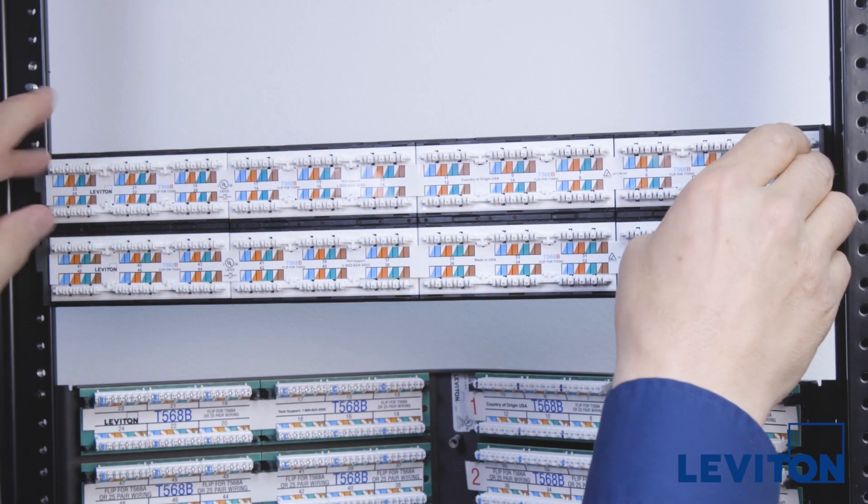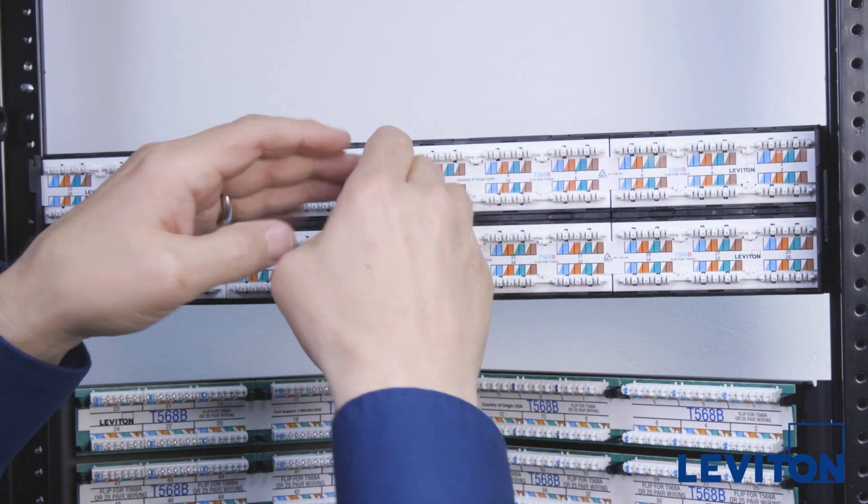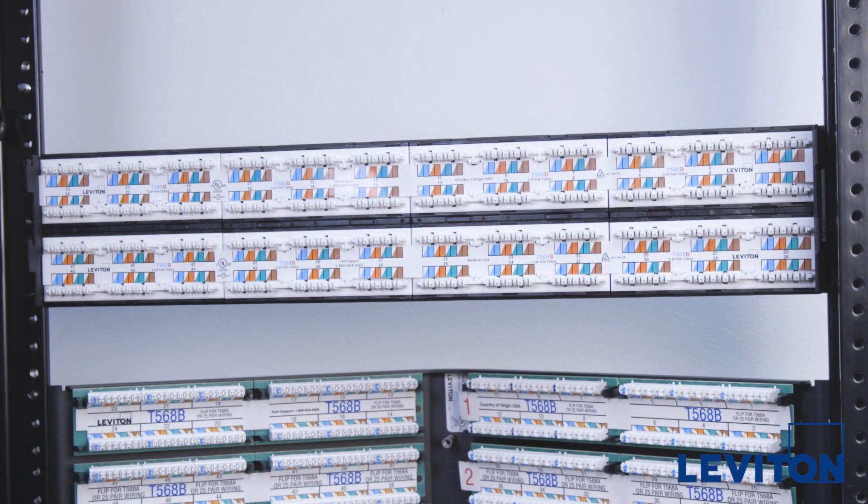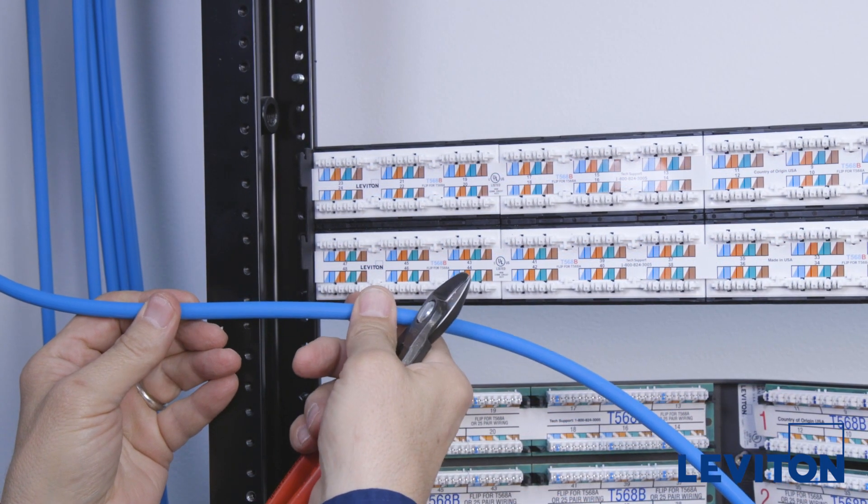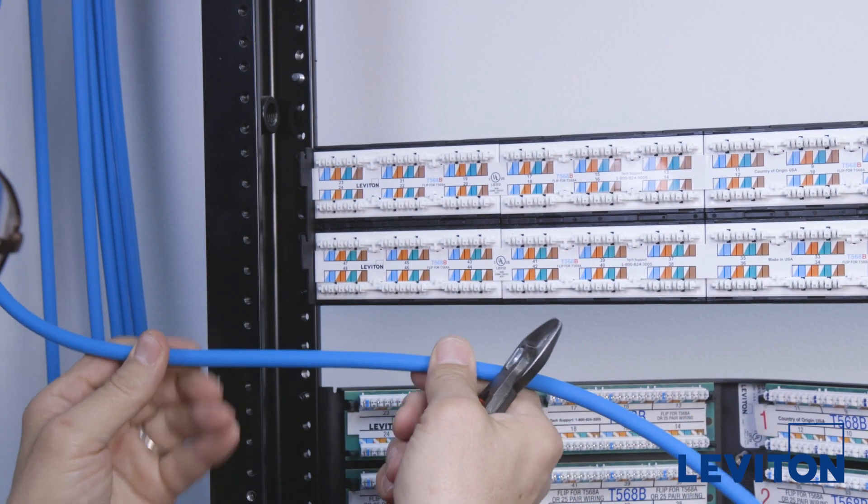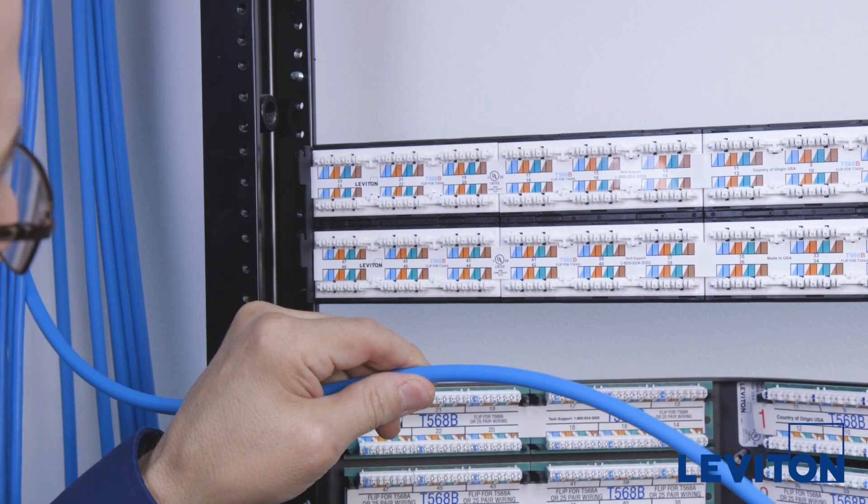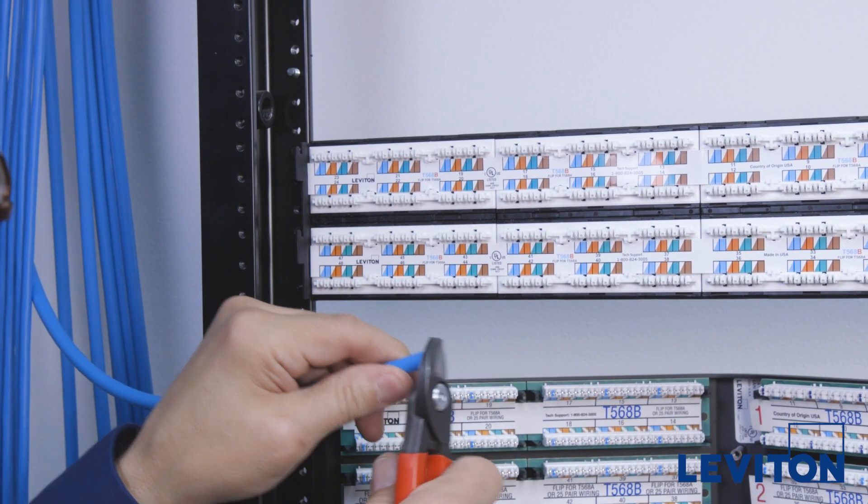For organization, we suggest working from the outside in by terminating all of the lower connectors first, followed by the top ones. To demonstrate using a single Category 6A cable, first bring the cable in to estimate the necessary length, then cut off the excess cable.